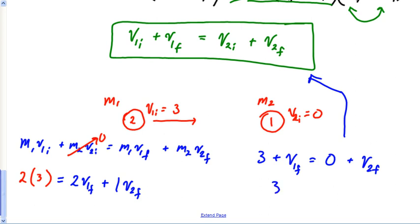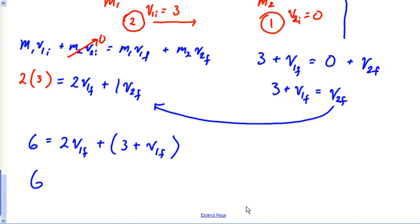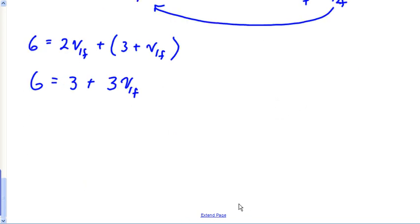So that means that 3 plus V1F is V2F. So now all I've got to do, extend my page, I'm going to now substitute that right back in. So this is 6 equals 2V1F plus 1 times, so this would end up being plus 3 plus V1F. And so this would give us 6 equals 3 plus 3V1F. I believe I combined those like terms correctly. Subtract 3 from both sides, 3 equals, oh my goodness.